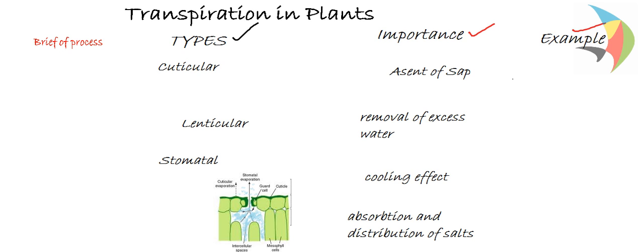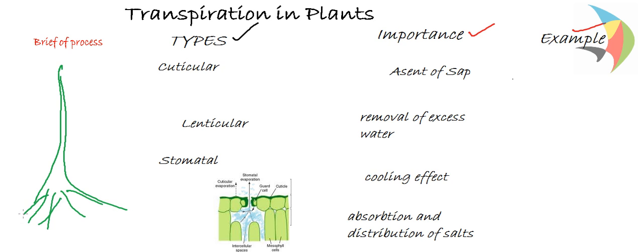First we will see what is transpiration and its effect on the plant. This is a plant with a stem structure and a root. Roots are deep inside the soil and it has a fibrous structure which consists of a lot of hairy roots. And these are the leaf surface.